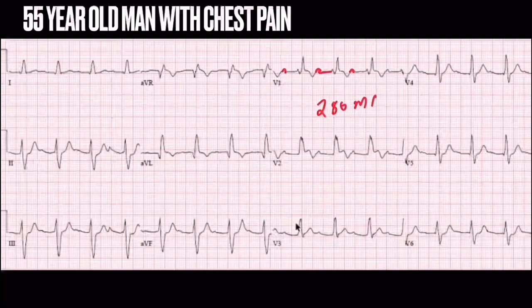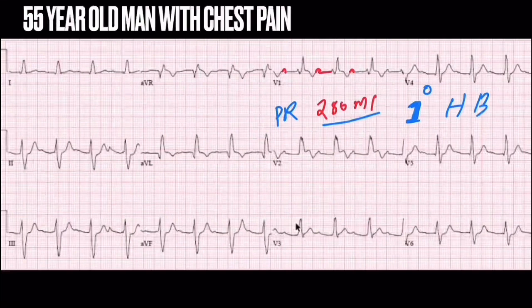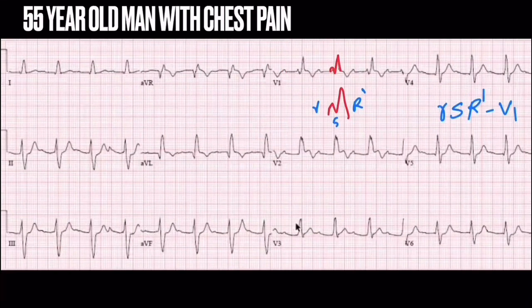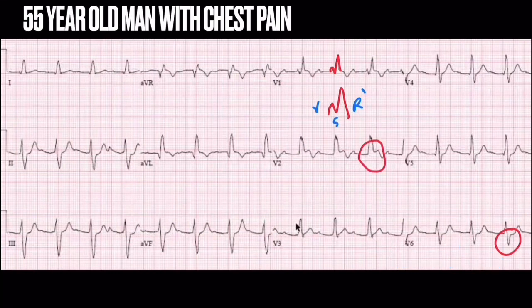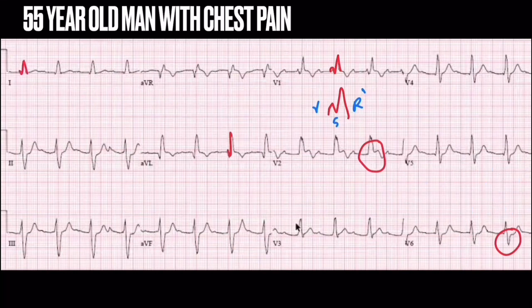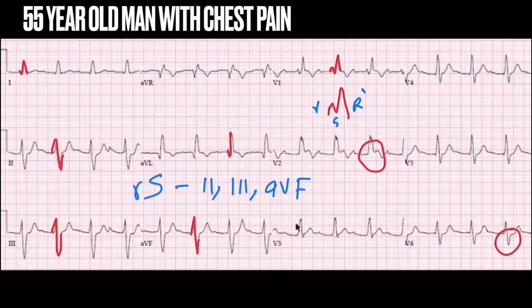In this first ECG, we can see that the PR interval is prolonged — here it is 280 milliseconds. Normally the PR interval is 120 to 200 milliseconds, so 280 milliseconds indicates first degree heart block. Lead V1 shows an RSR' pattern, and lead V6 shows slurred S wave, and also in lead V1 we can see concordant ST elevation in lead V2. There is also a QR pattern in lead V1 and AVL, an RS pattern in leads 2, 3, and AVF, and left axis deviation — the QRS in lead V1 is predominantly upright and QRS in lead AVF is predominantly downward.